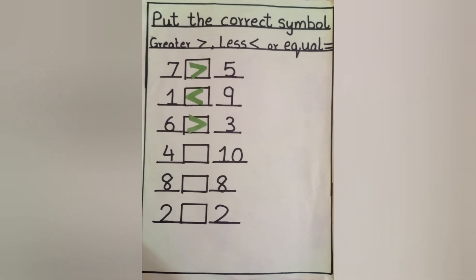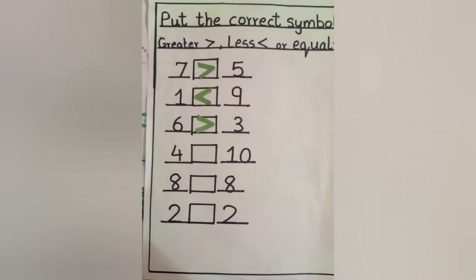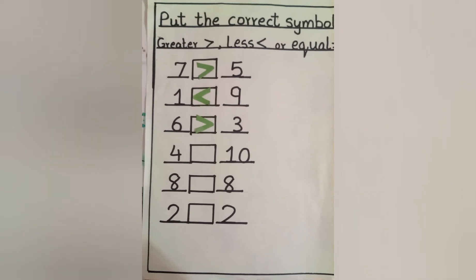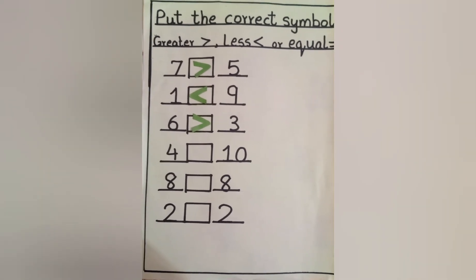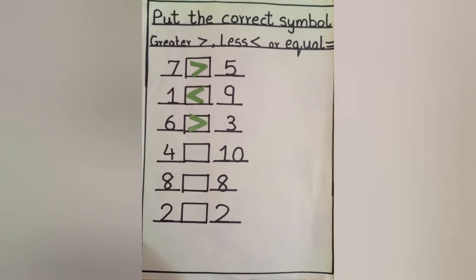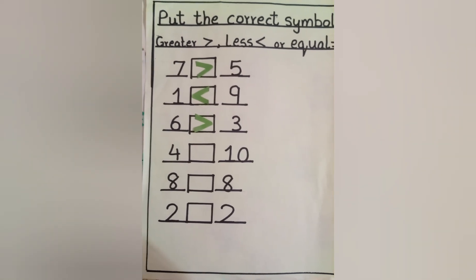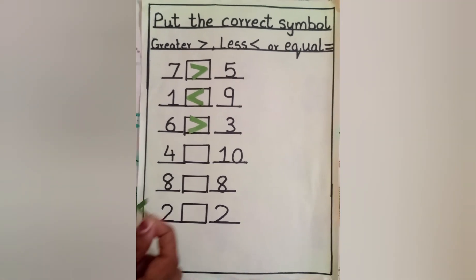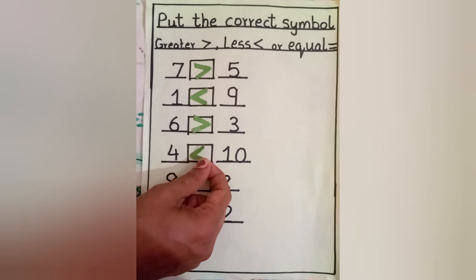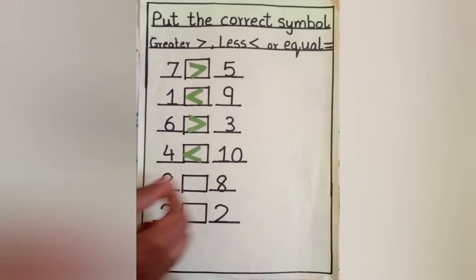Next number. Which number is bigger? Four number or ten number? Yes, ten number is bigger number. Now crocodile will eat number ten. Mmm tasty.